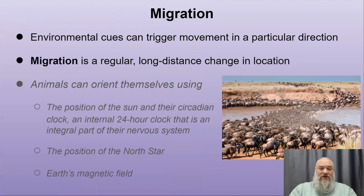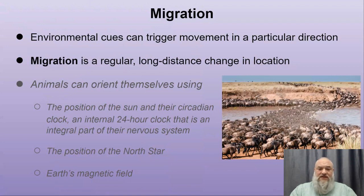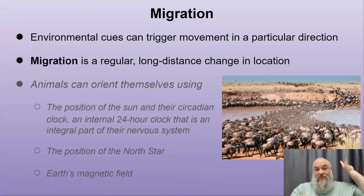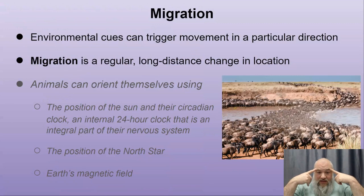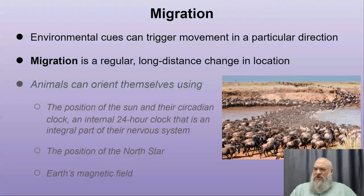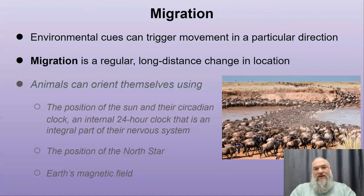Migration is an example of a behavioral pattern in response to a stimulus. Environmental cues trigger a regular long-distance change in location. Animals orient using the sun's position, requiring a circadian clock since the sun is in different places in the morning versus the evening. Nocturnal animals can navigate by the stars. Some animals detect Earth's magnetic field — we know this because placing magnets near them disrupts their sense of direction.